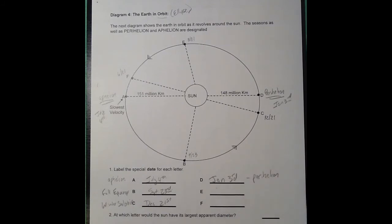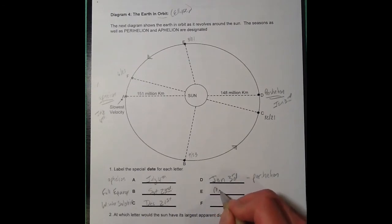E is March 21st, March 21st is going to be the spring equinox, and F would be June 21st, which is the summer solstice.